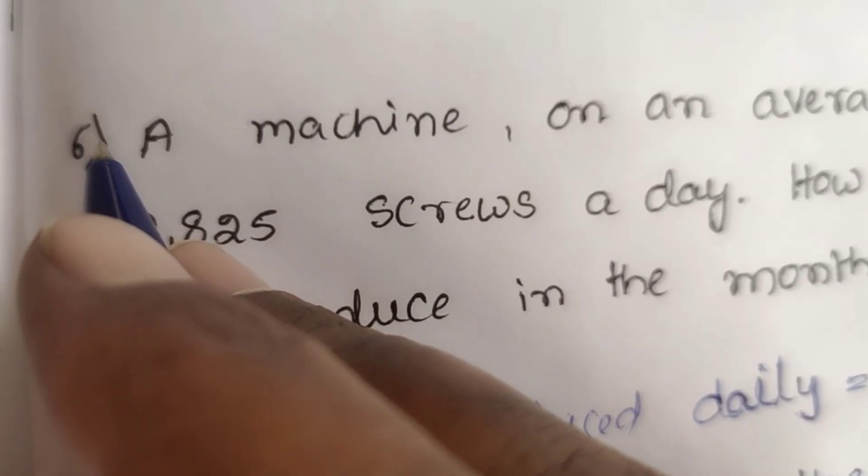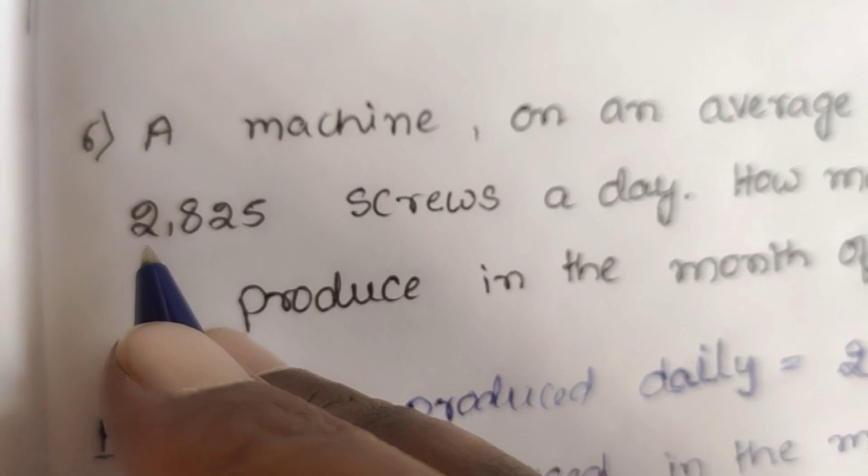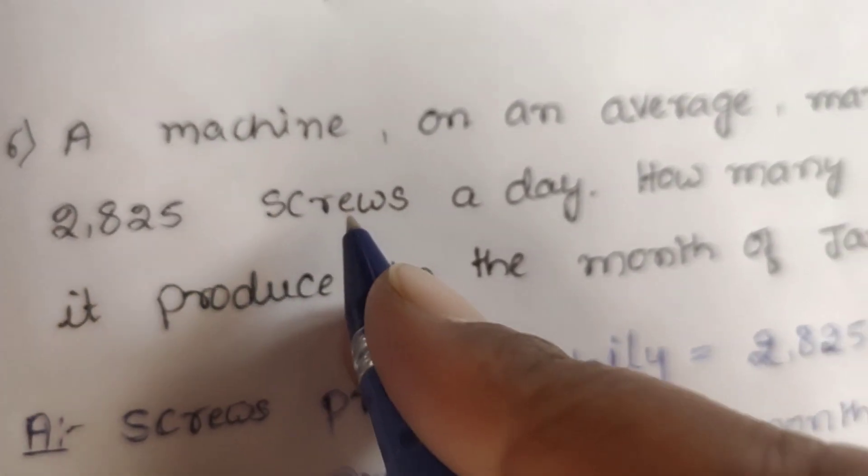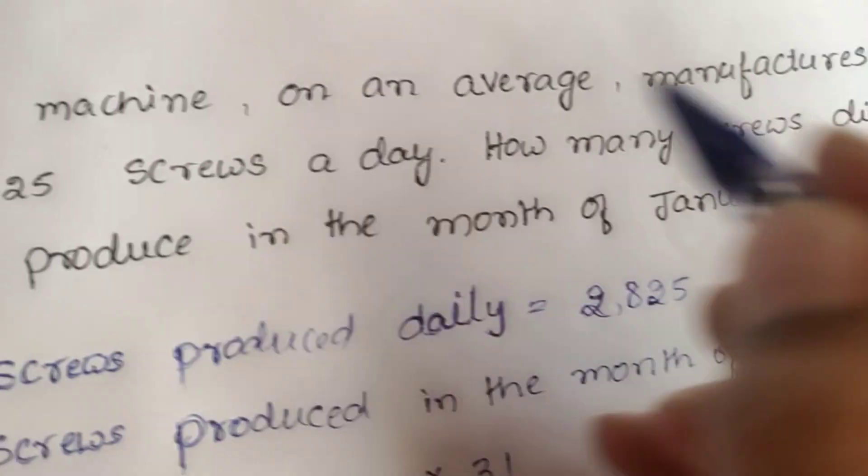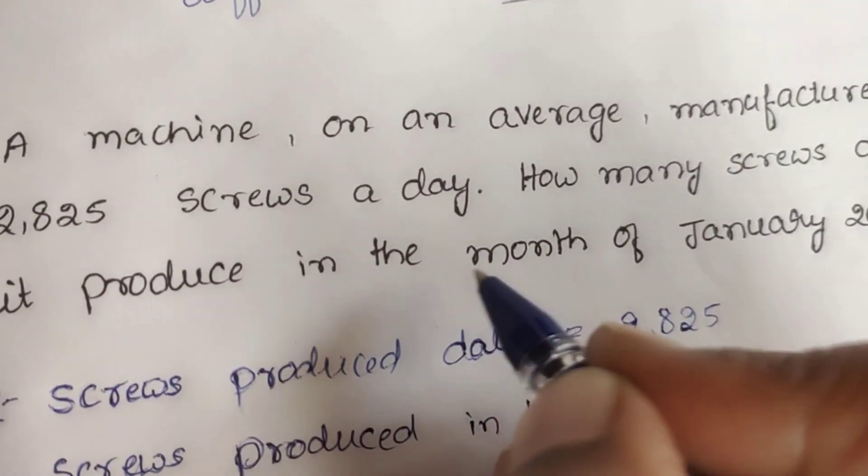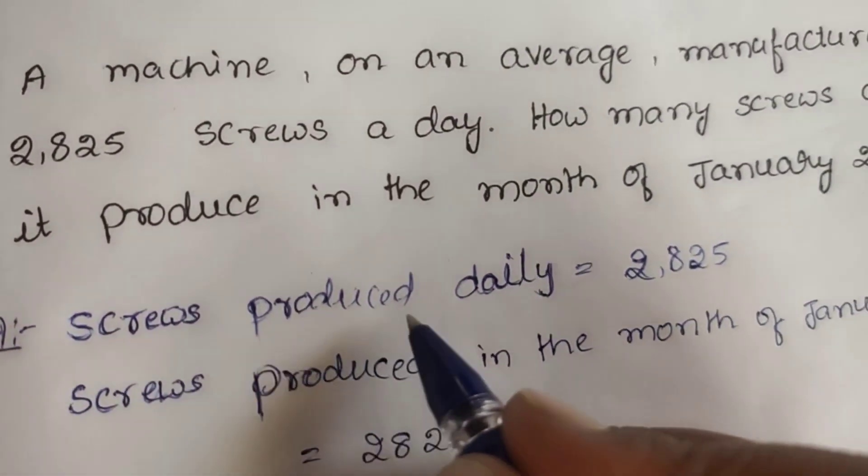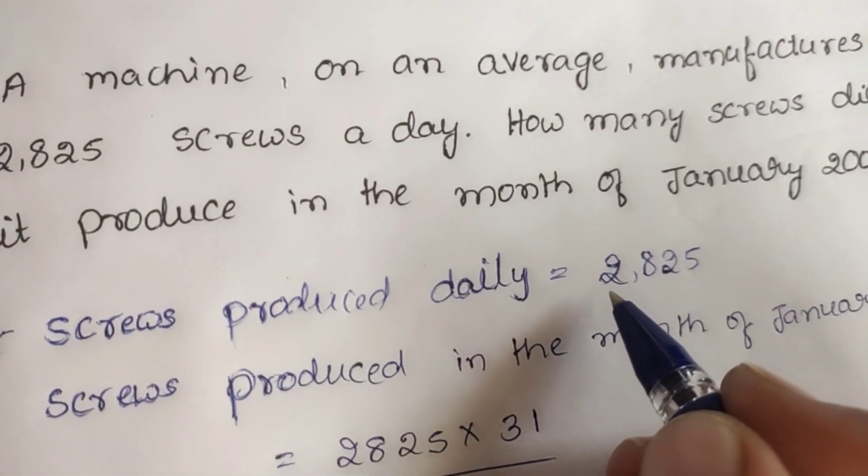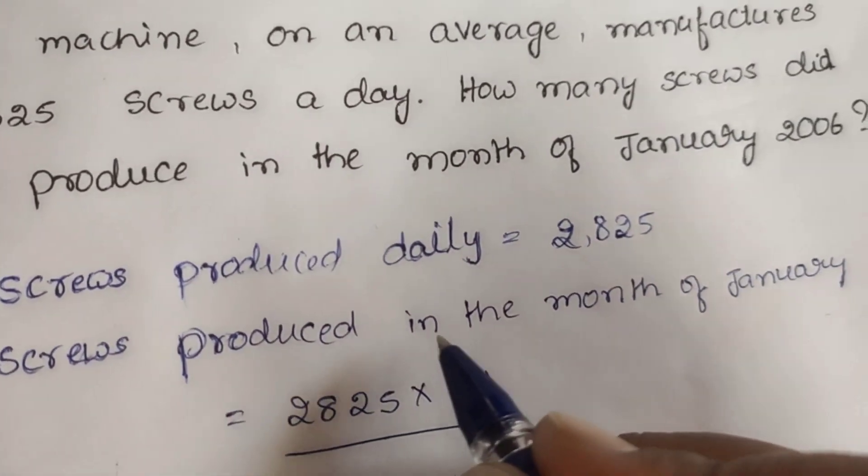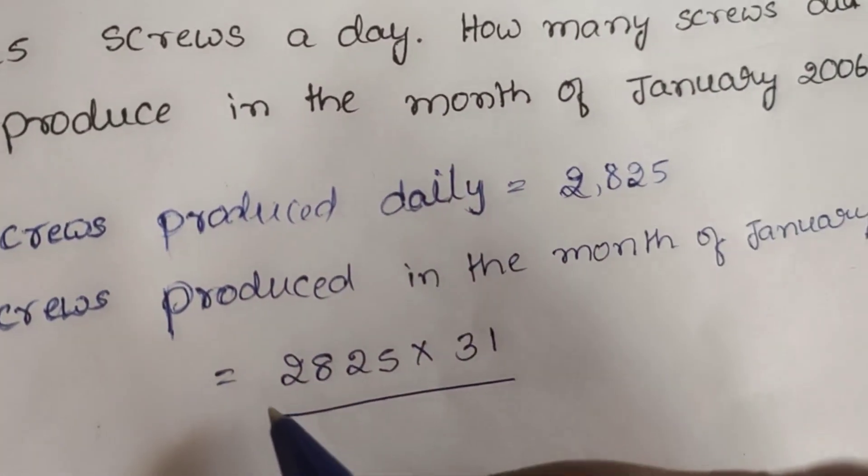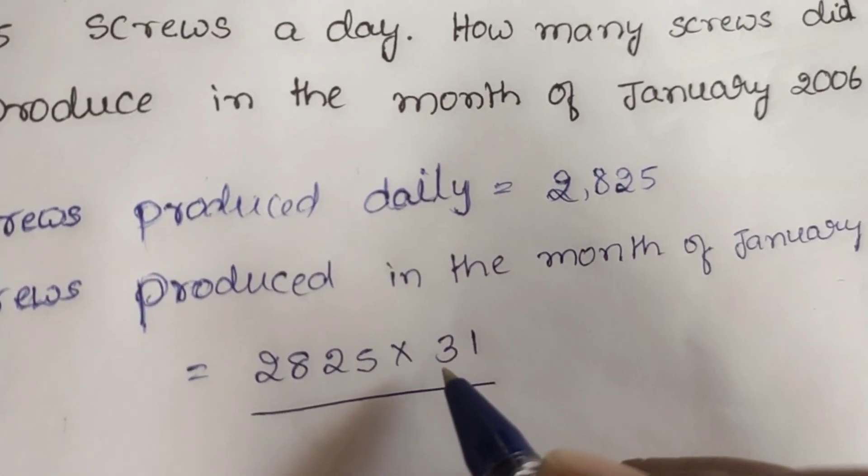Sixth question: A machine on an average manufactures 2,825 screws a day. How many screws did it produce in the month of January 2006? Answer: Screws produced daily is equal to 2,825. Screws produced in the month of January is equal to 2,825 into 31 because January has 31 days.